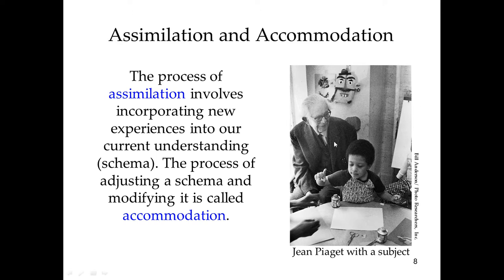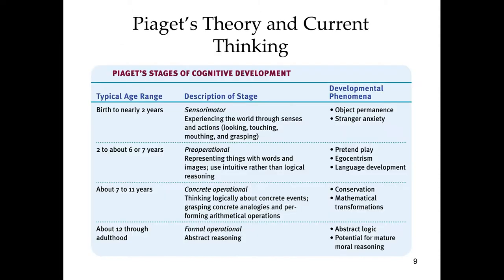Piaget is the central figure in this lecture — he believed we go through four primary stages of development: the sensorimotor stage from birth to about two years; pre-operational from about two to six or seven; concrete operations from seven to eleven; and formal operations from about twelve through adulthood. There are also developmental milestones spaced throughout these stages.